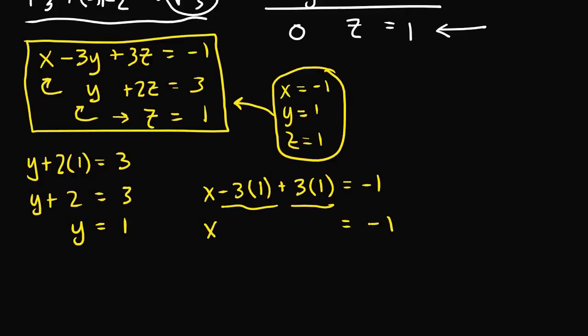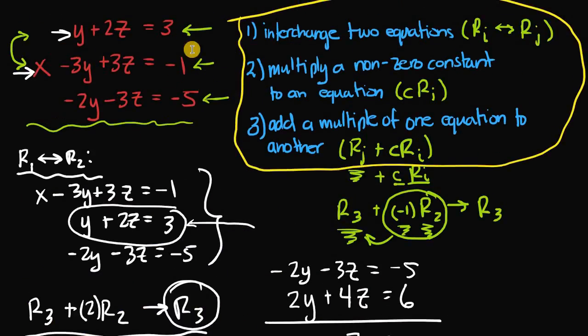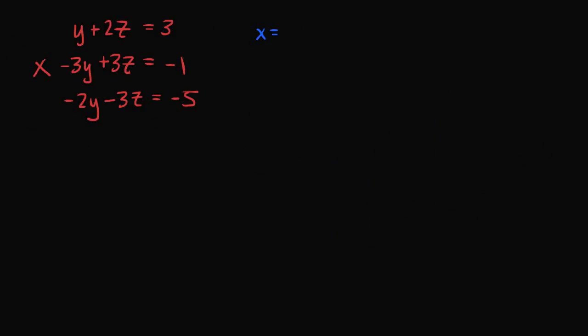Our solution set for this equivalent system in row echelon form is x equals negative one, y equals one, and z equals one. Now we need to verify that these values also satisfy the original system, which was written in red.